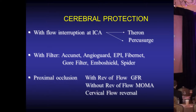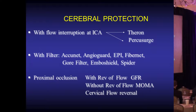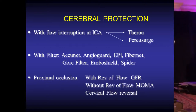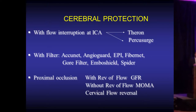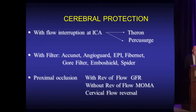Then we have what we call proximal occlusion, and that proximal occlusion can be done in three different ways: with flow reversal, without flow reversal using a device named MoMA, and a more recent technology called cervical flow reversal.